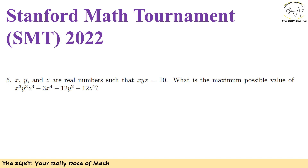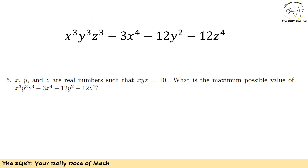Now let's talk about the solution. To solve it, let's take another look at the expression that we are going to maximize. We have x, y, z as real numbers and the only thing that we know is xyz equals to 10. We have x cubed y cubed z cubed here, which is basically xyz to the power of 3. Since xyz is 10, the first term is a constant value — there is nothing that we can optimize.